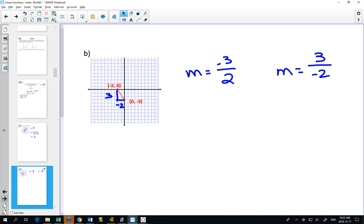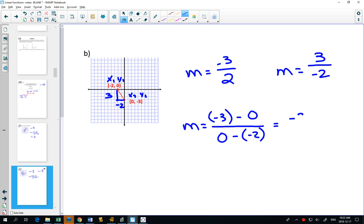If you're unsure, then you can go to your formula. I'm going to make this one x1 and y1, this one x2 and y2. My slope formula says y2, negative 3, minus y1, 0, over x2, 0, minus x1, negative 2. Negative 3 minus 0 is negative 3. 0 minus a negative 2 is positive 2. So it comes out to negative 3 over 2, whichever way you go about it.